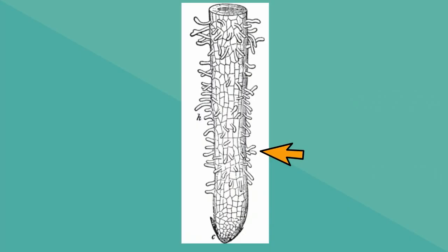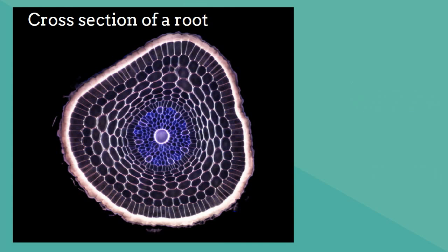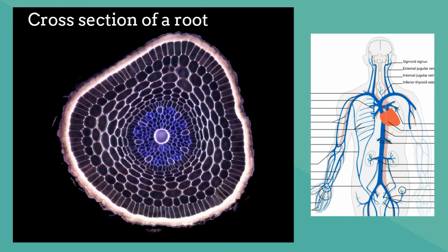Root hairs grow out of the surface of the root. These hairs increase the surface area and allow the root to absorb more water and nutrients. In the middle of the root are vascular tissue. Vascular tissues are transportation, kind of like the veins and arteries inside of us. There are two main types.